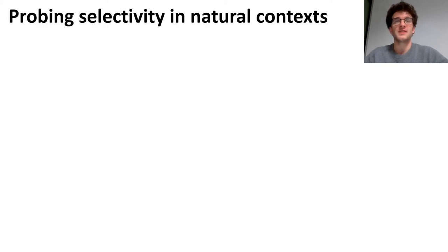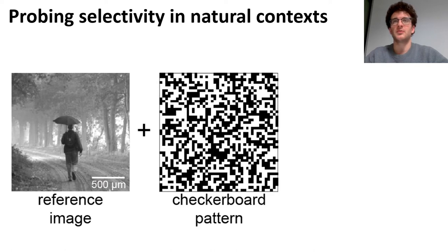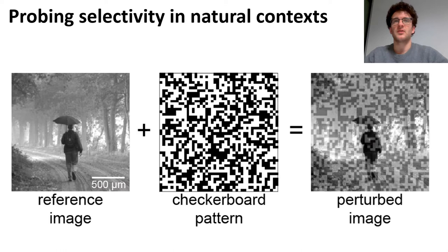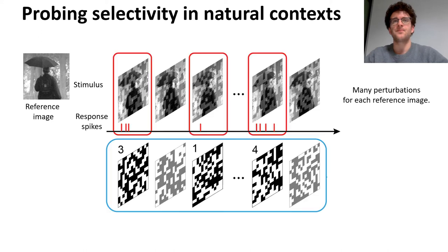So to assess this, we did electrophysiological recordings in the dissected retinas of mouse and axolotl and we presented the retina with a bunch of natural images that we perturbed with a set of dim random noise patterns. Each natural image was shown over 1000 times and each time it was perturbed with a different perturbation. Then all the perturbations of one image were averaged together and each was weighted by the number of spikes it evoked.